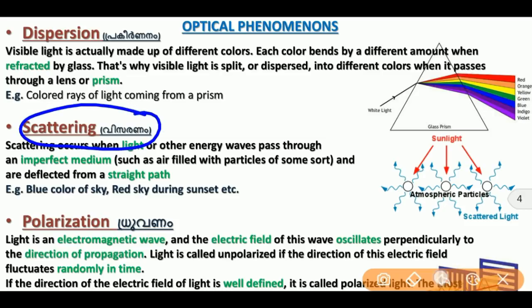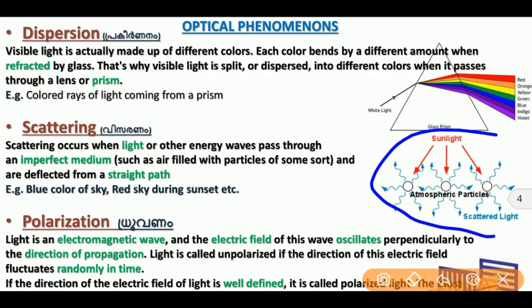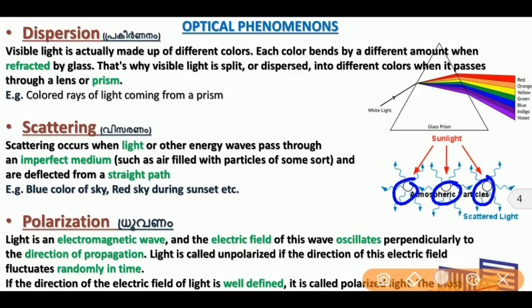Scattering occurs when light or other energy waves pass through an imperfect medium. When light hits particles in the medium, it scatters in different directions. This scattering of light is the reason for various optical phenomena we observe in nature.